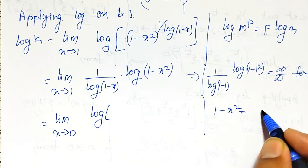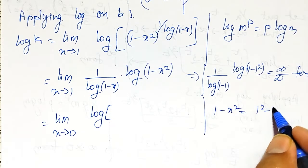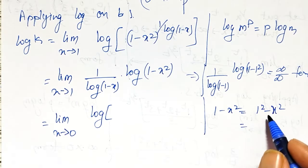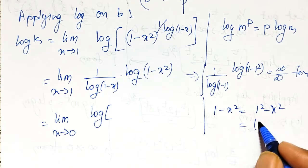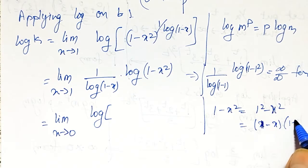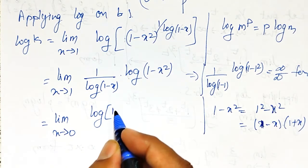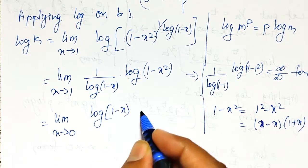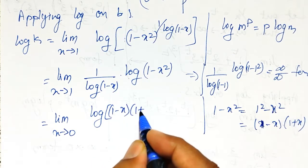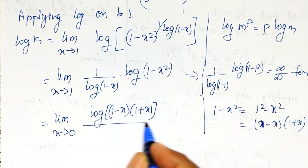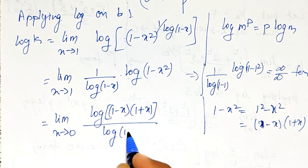...where 1 minus x squared can be written as (1 minus x)(1 plus x) using the difference of squares formula a squared minus b squared. So I can write 1 minus x squared as (1 minus x)(1 plus x).